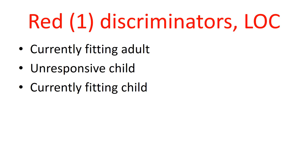There are also level one discriminators based on altered level of consciousness. If an adult or child is currently fitting, that is category one — they require immediate management. The big risk is an obstructed airway, so our main role is to maintain the airway, ensure the patient comes to no harm during the fit, and place them in an appropriate recovery position. Additionally, if a child is unresponsive on the AVPU scale — alert, responding to voice, responding to pain, unresponsive — that classifies as a red level one situation requiring immediate assessment and management.